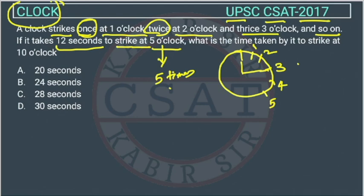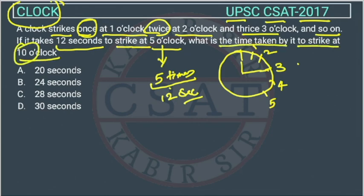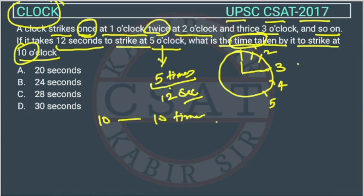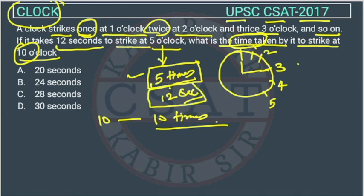So if it takes 12 seconds to strike at 5 o'clock — 5 strikes take 12 seconds — what is the time taken by it to strike at 10 o'clock? At 10 o'clock it will strike 10 times. If you see, it is just double of this one — 5 o'clock is striking 5 times and taking 12 seconds, so at 10 o'clock the clock will strike 10 times. How many seconds will it take?